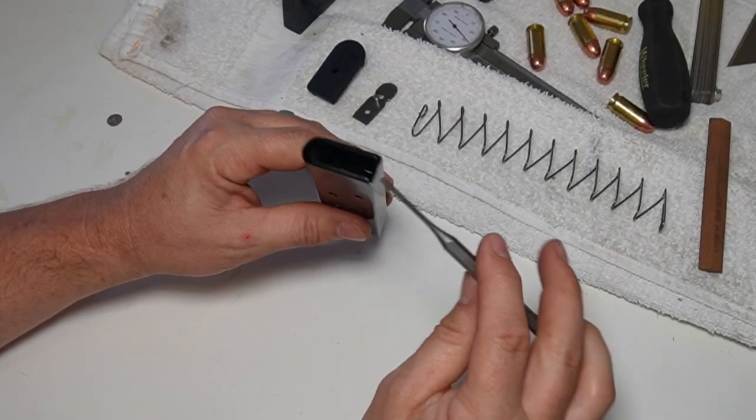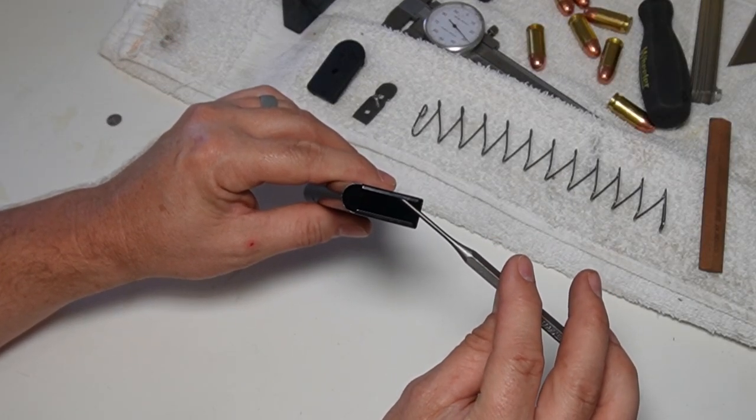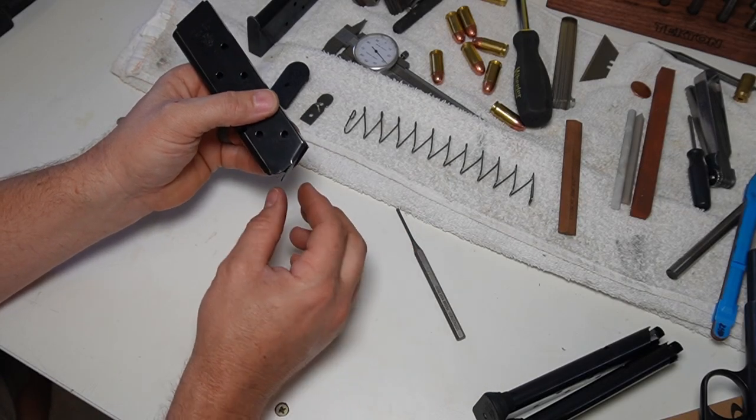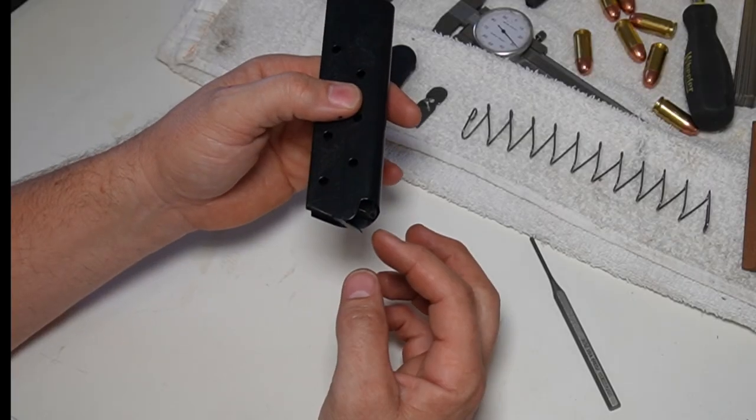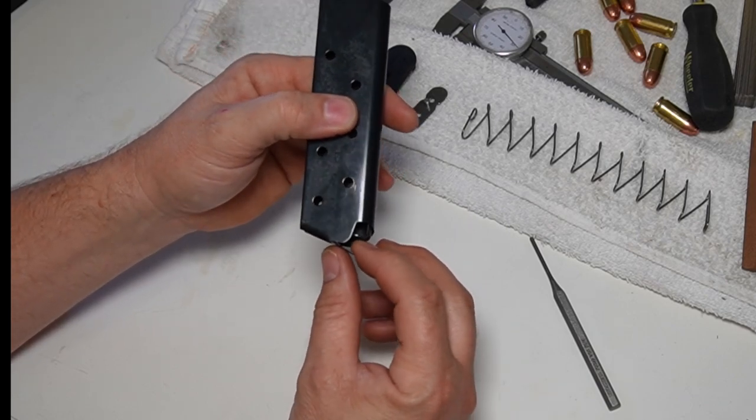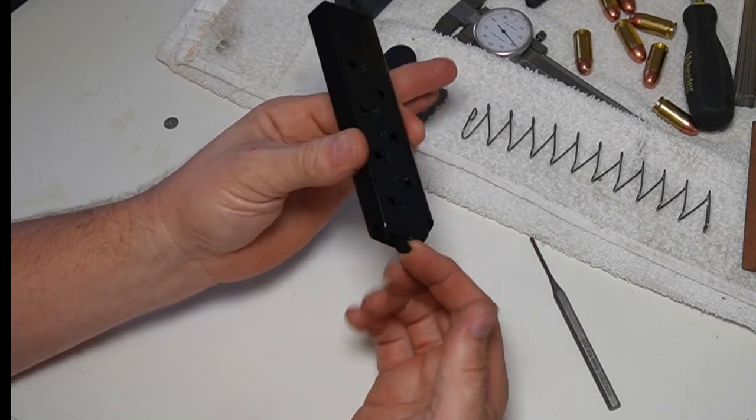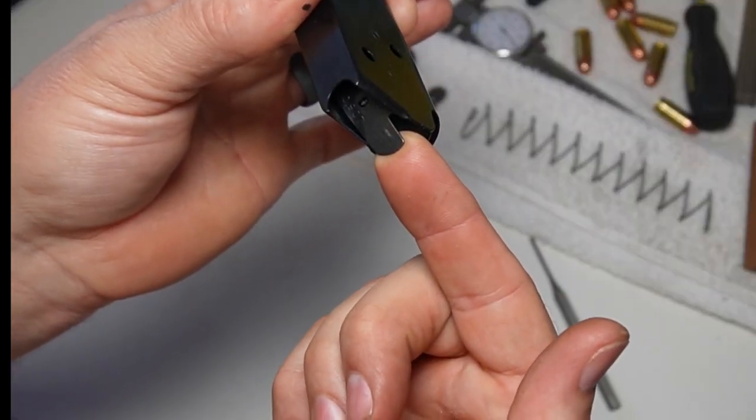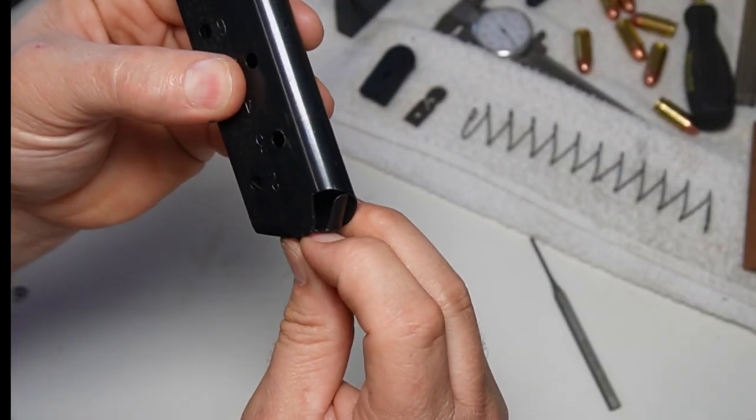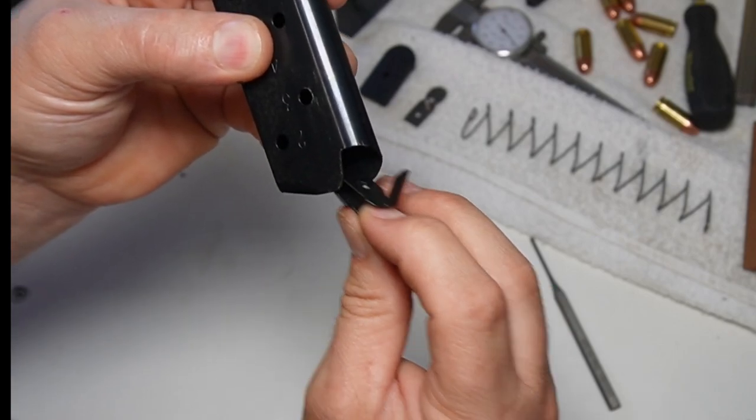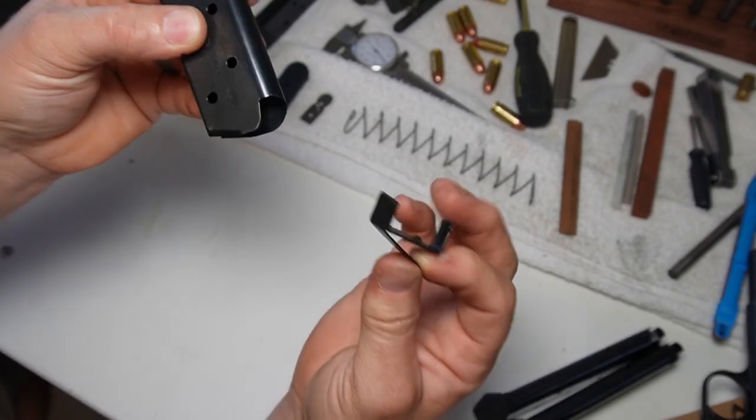Your follower does not come out through the bottom because of these lips right here. What you're gonna want to do, you're gonna grab the top of the follower, you're gonna push in and you're going to bend it back like that and then pull out. So pretty easy.